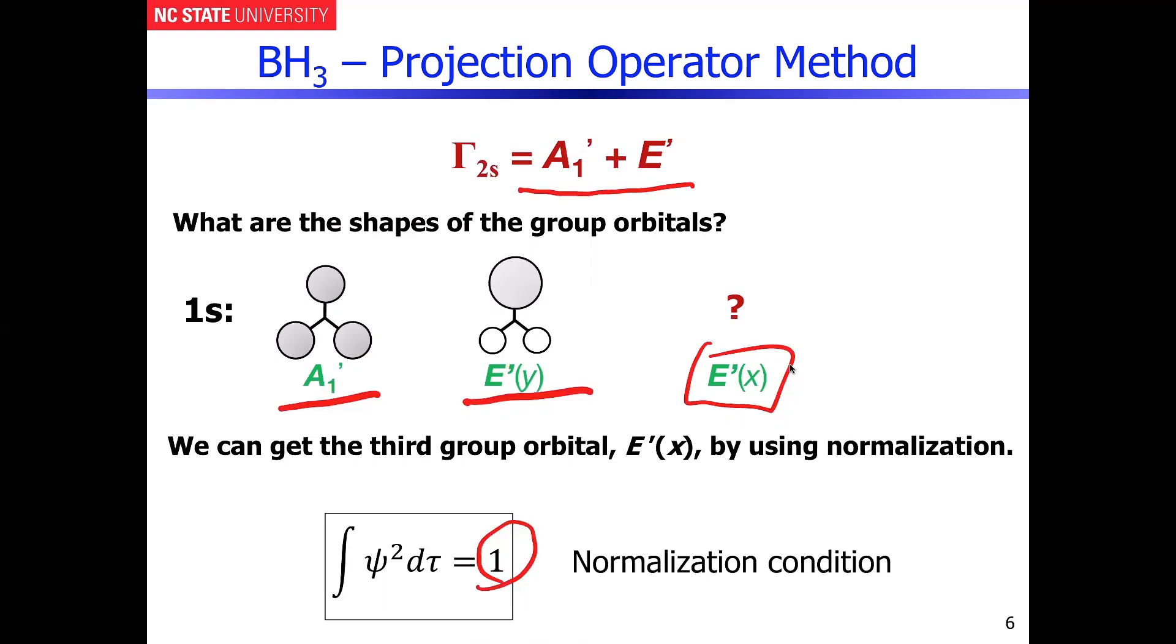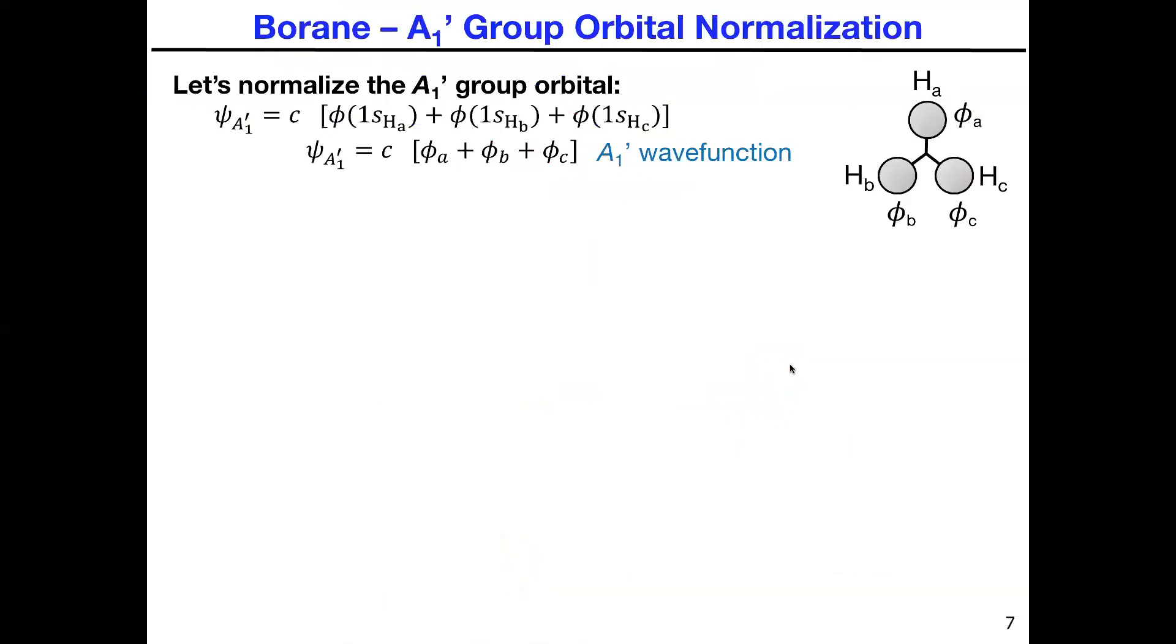It's basically the integral of the wave function over all space. The probability of finding that electron is 100% or 1. If we draw the group orbitals correctly, they in the end have to also be normalized, and they're going to take different weightings of the components of the different 1s orbitals that compose them.